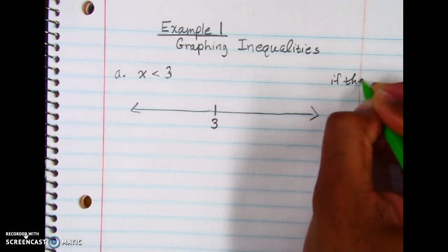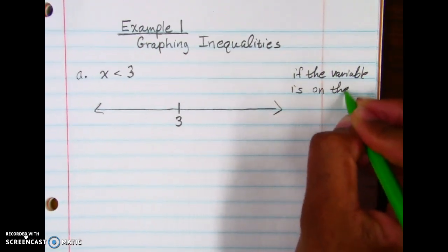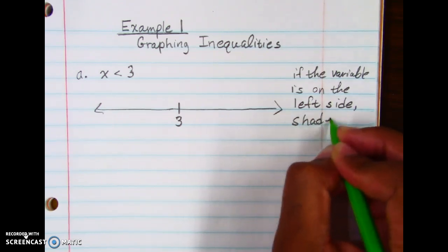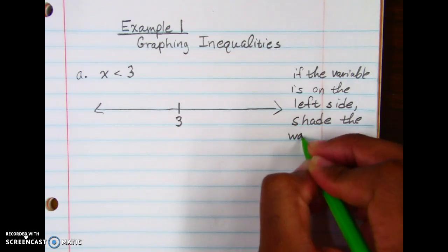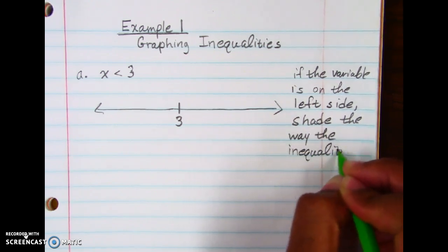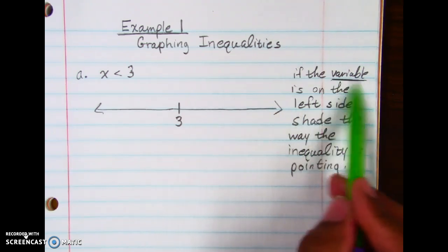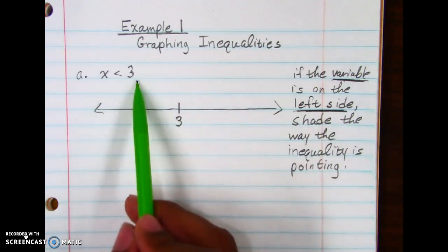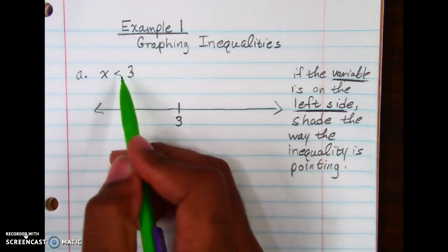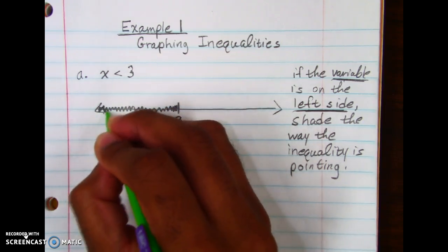The great thing about this: if the variable is on the left side, we shade the way the inequality arrow is pointing. So since X is on the left side and the inequality points less than, we shade everything smaller than 3 — all those values to the left.